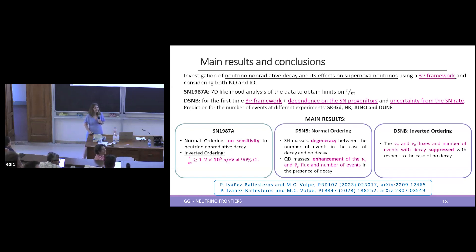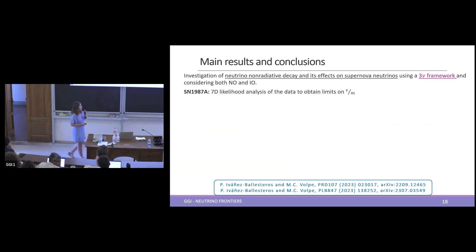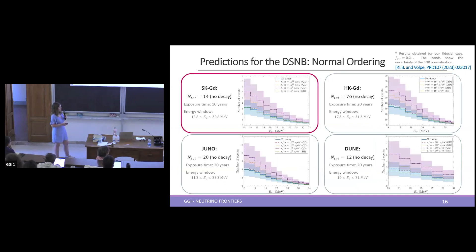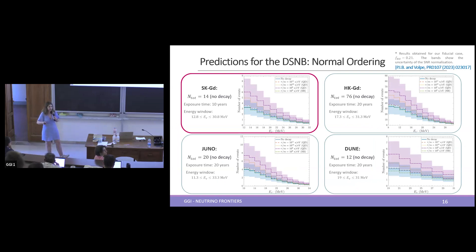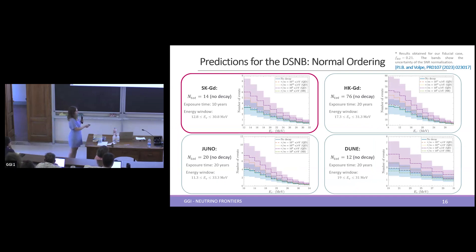Question: How stable are your results with respect to flux uncertainties, for both the DSNB flux and for 87A? For the DSNB flux, regardless of flux uncertainties, we would still see an enhancement for quasi-degenerate masses and a suppression in inverted ordering — that behavior remains. However, the bands shown only include uncertainty from the supernova rate normalization; there's still large uncertainty on the black hole fraction, and different supernova simulations give different results.